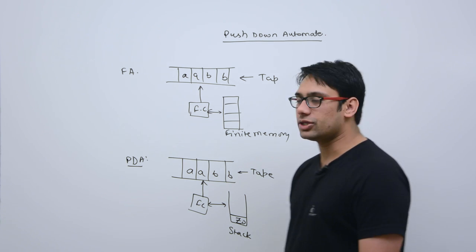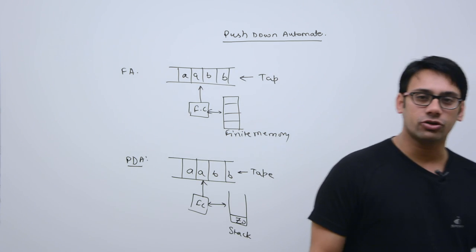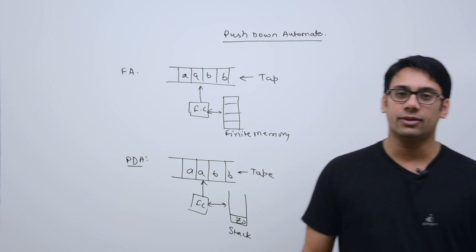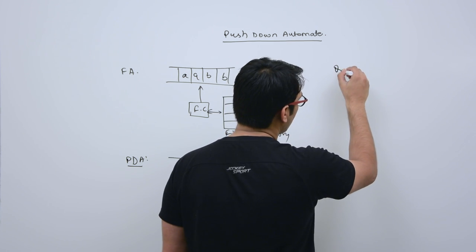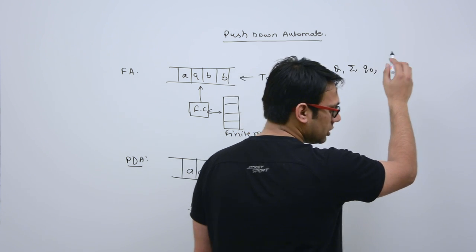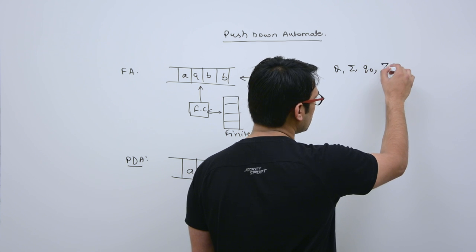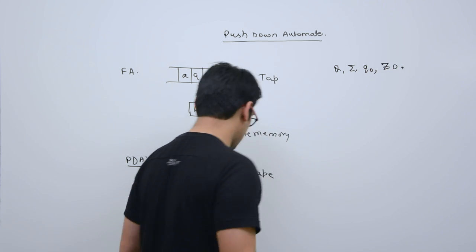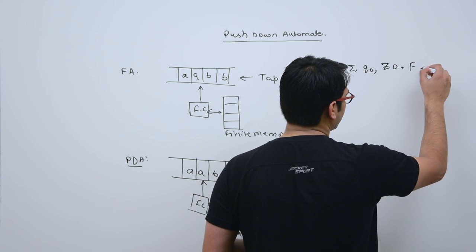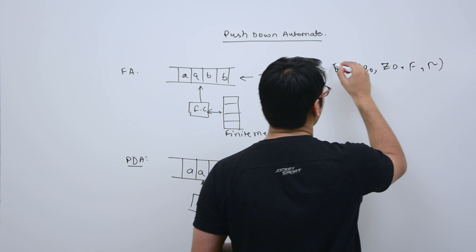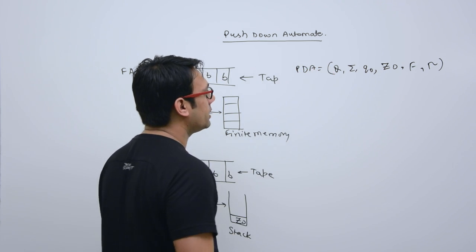This kind of machine is called a pushdown automata. The formal definition of a pushdown automata can be represented as a tuple: Q, Σ, q₀, δ, Z₀ (the stack bottom symbol), F (set of final states), and τ (the stack alphabet).